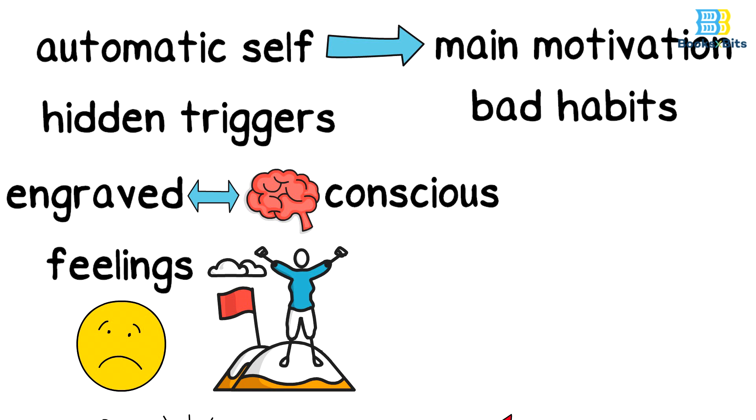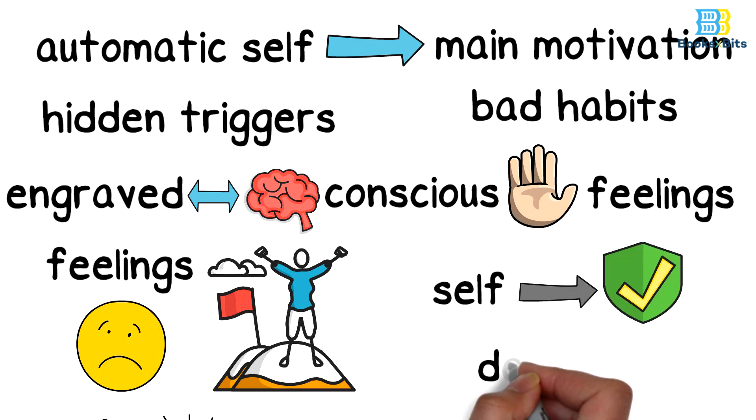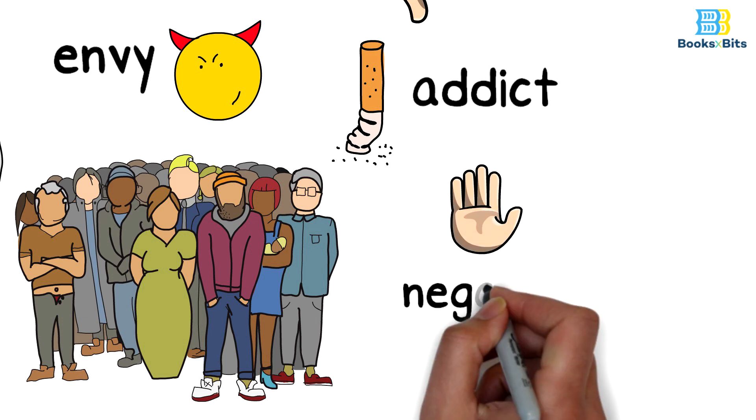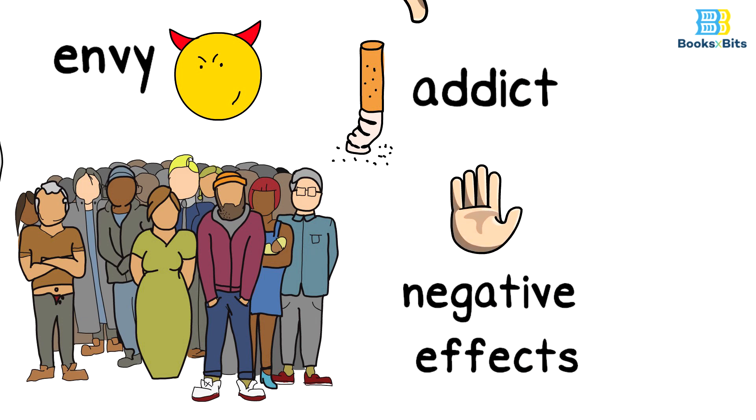Rather, the automatic self denies those feelings as a kind of self-defense mechanism until denial becomes a harmful lifestyle, such as the heavy smoker or the addict who denies the negative effects of drugs on his life and his family's life.